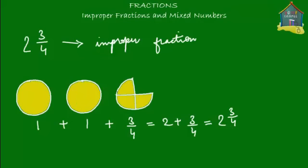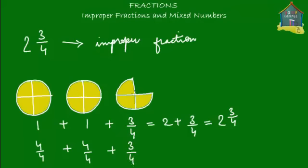Each pizza is divided into 4 slices because the denominator of the fractional part says 4. Let's divide each whole pizza into 4 slices. The first pizza gives 4 upon 4, the second is also 4 upon 4, and the third contributes 3 upon 4. Together you have 4 plus 4 plus 3, which is 11 upon the denominator 4. The mixed number 2 and 3 upon 4 is equal to the improper fraction 11 upon 4.